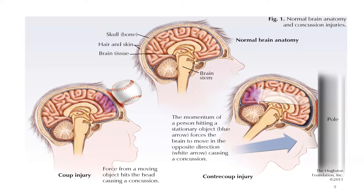Here, the first picture is indicating normal brain anatomy. A coup injury is when a moving object hits over the head — like a ball — causing concussion, damage, or bleeding in the brain.